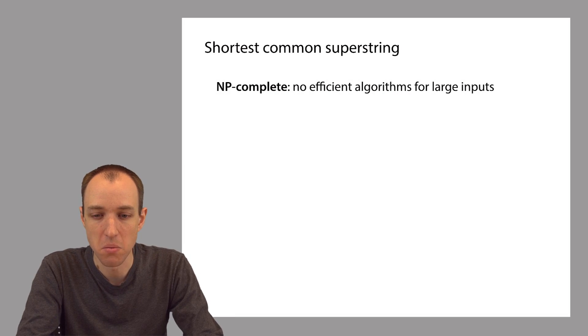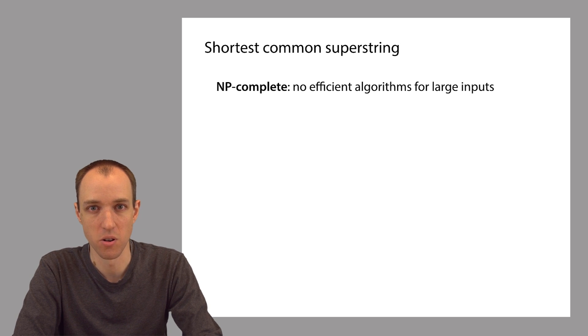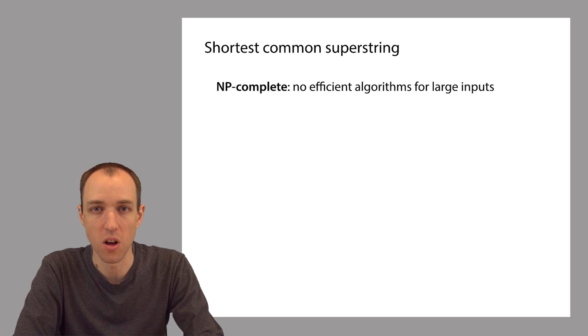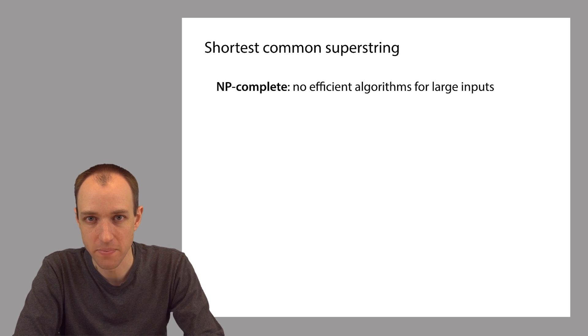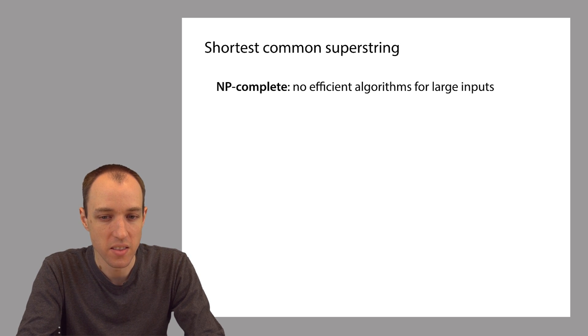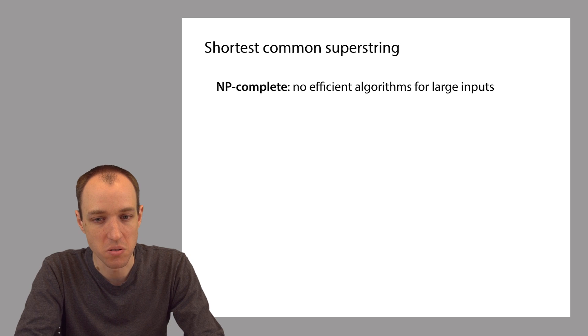The first downside is that this problem is just not tractable — there are no efficient algorithms for solving it. The technical term is that the Shortest Common Superstring problem is NP-complete, and NP-complete problems are very unlikely to have an efficient solution. This doesn't mean it can't be solved; we'll see an algorithm for it soon. But it's not going to be very fast, and as the number of input strings grows, it's going to get slow very quickly.